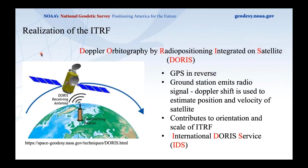The second technique is DORIS — Doppler Orbitography by Radio Positioning Integrated on Satellite. Think of it as GPS in reverse: instead of satellites transmitting to ground receivers, transmitting beacons on the Earth's surface send radio waves received by satellites. The Doppler shift in that transmission is used to estimate both the position and velocity of the satellites, and also the position of the transmitting beacon on the ground. DORIS contributes to the orientation and scale of the ITRF.